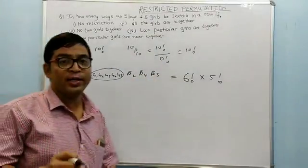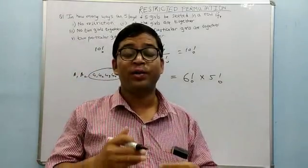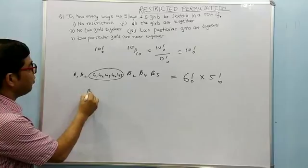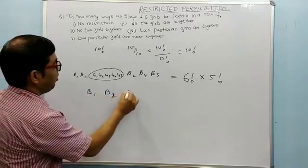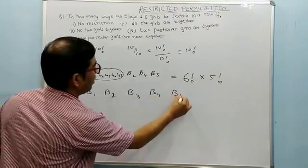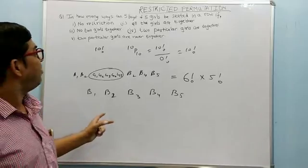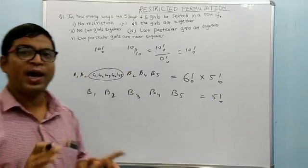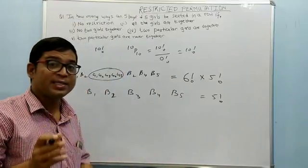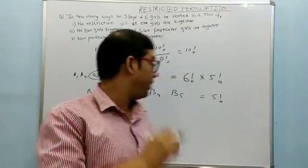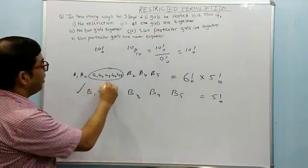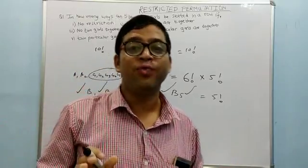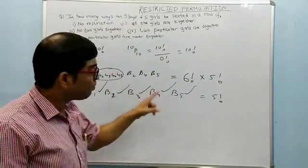The third question is that no two girls are together. We call this type of problem the gap method. Since there is no restriction on the boys, we first arrange the five boys — B1, B2, B3, B4, B5 — in 5 factorial ways. Now we need to find places for the girls so that no two girls are adjacent. The girls can be seated in the gaps: before, between, and after the boys — giving six available positions.